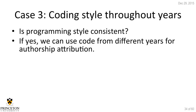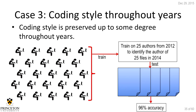Obfuscation is not the solution to anonymization in source code. What happens to coding style over time? We want to see if coding style is consistent — because if so, we can take someone's code from 10 years ago and test on code from this year. We took 25 coders from 2012, trained the classifier on them, and used 2014 data as test data. We were able to correctly identify them with 96% accuracy.